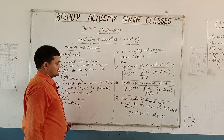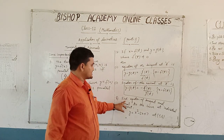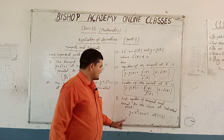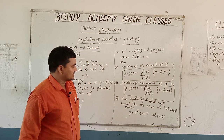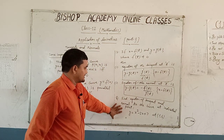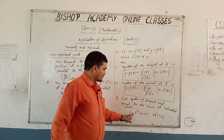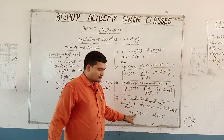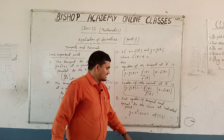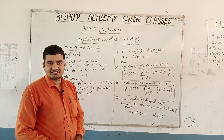Now students, we will solve a question. The question is: find the equation of the tangent and normal to the curve at the indicated point. The equation of the curve is y = x³ − 2x + 7 and the point is (1, 6).